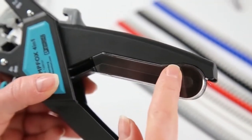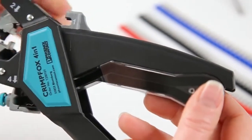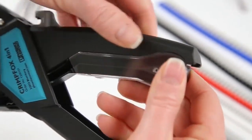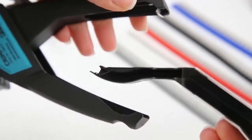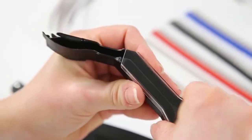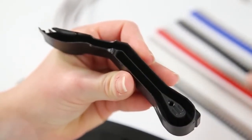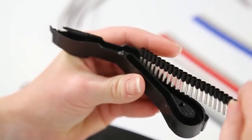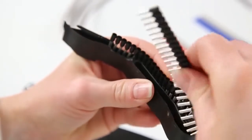This piece is the ferrule magazine that holds the strips of ferrules we are going to load. To remove it, gently pull down. Remove the plastic protective cover. Insert the ferrules barrel down, turning the strip around the base of the magazine.